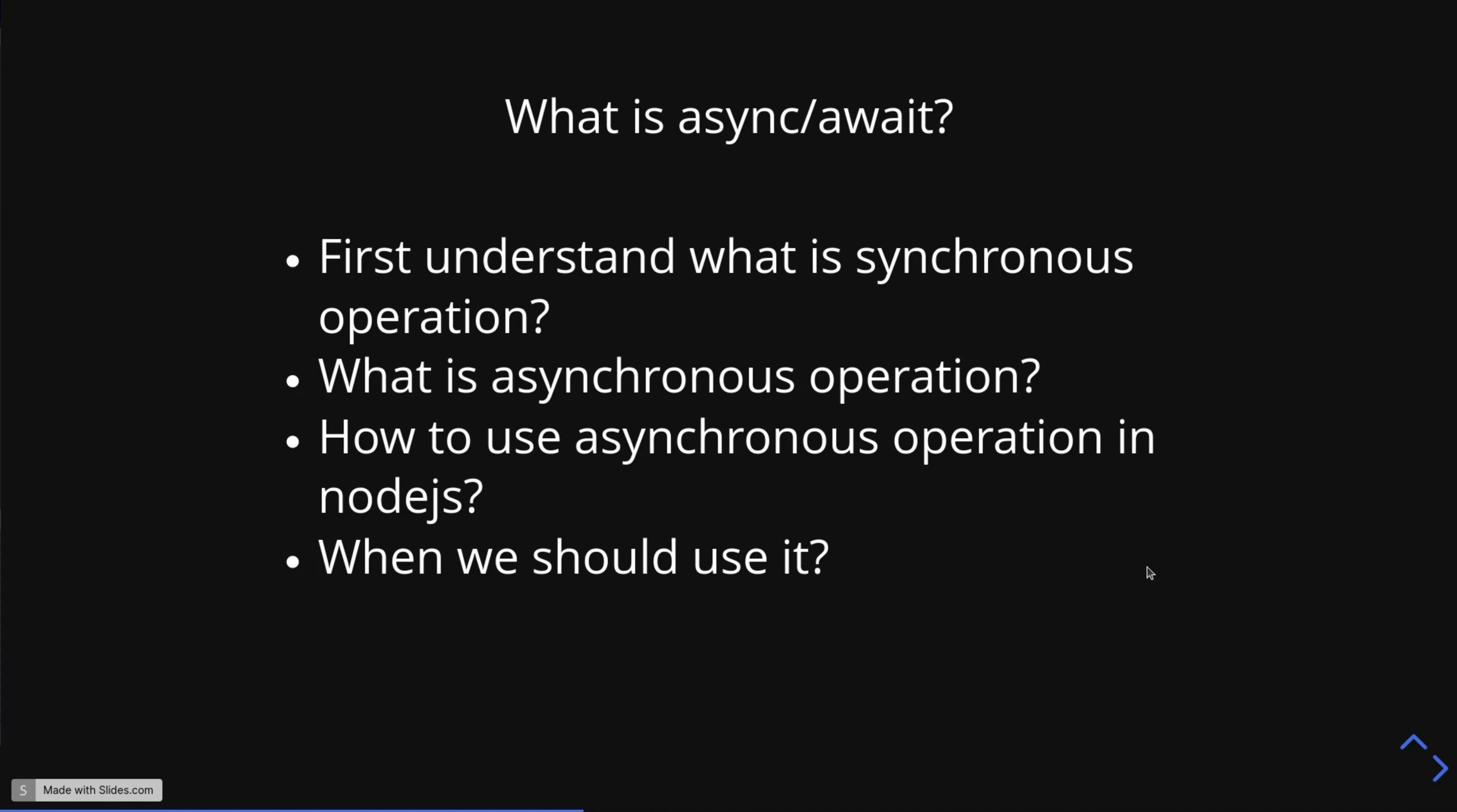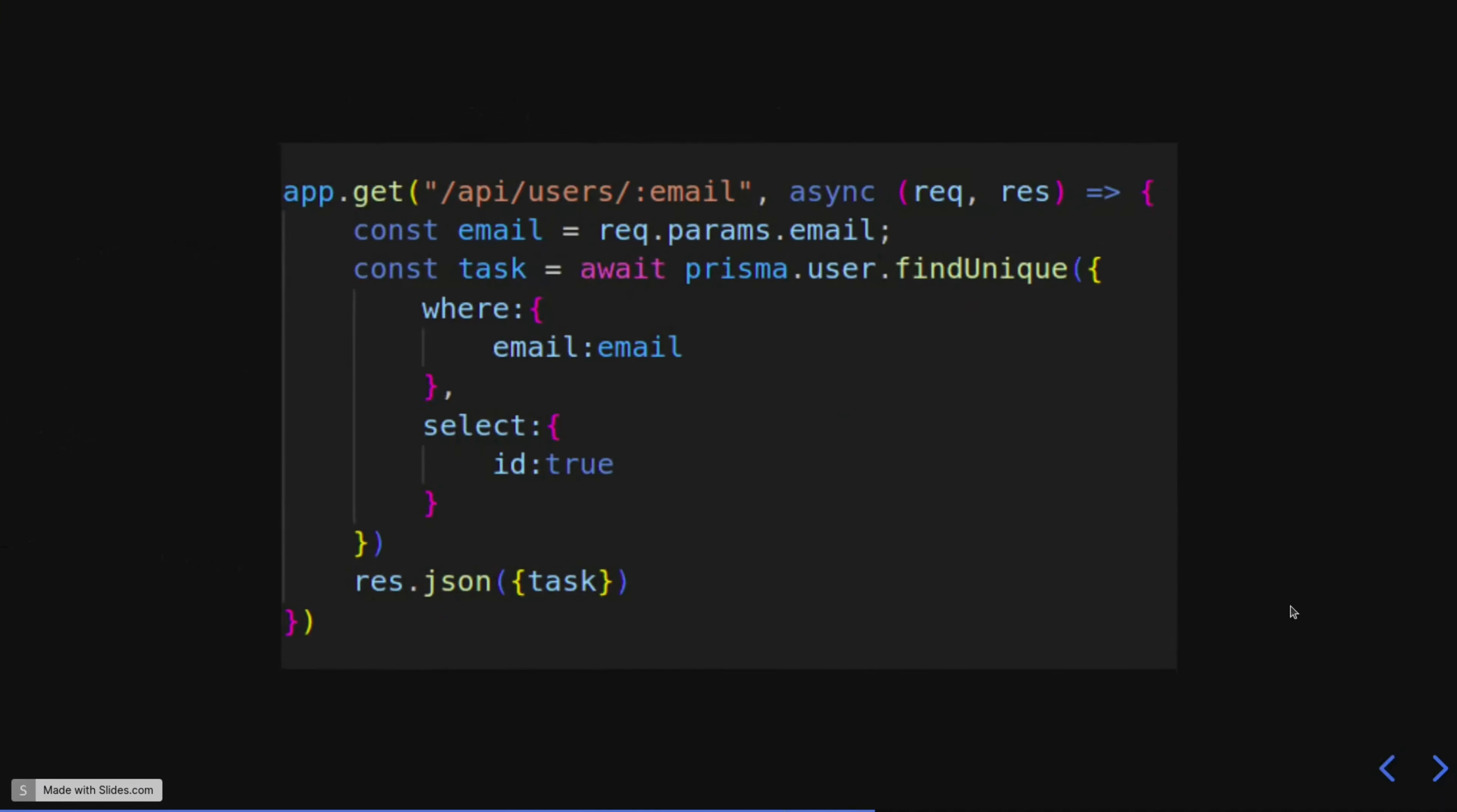Next, we are going to see how to use asynchronous operation in Node.js. Let us consider one example: we are going to get the data about the user from the database by using email address. How to use async await keyword for this operation?